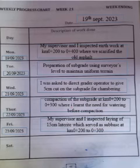For this particular report, the date is 19th September 2023, the first date of the week. Some persons can decide to write from 19th September to 23rd September 2023 — that is from the first date of the week to the last date of the week that you attended work, from Monday to Friday.